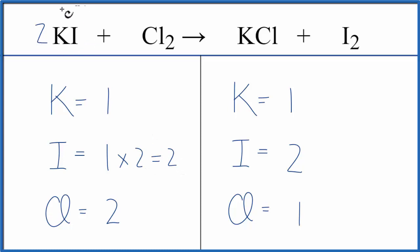But the two, it applies to everything, so the K, one times the two, that'll give us two potassiums.